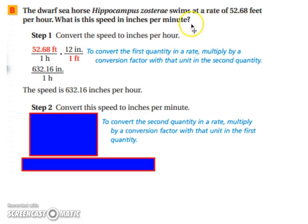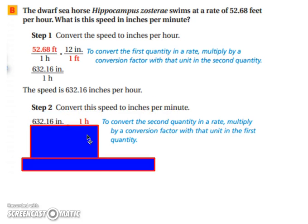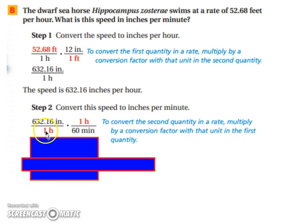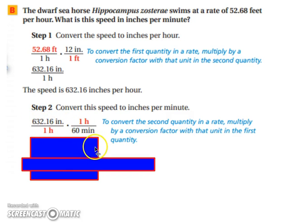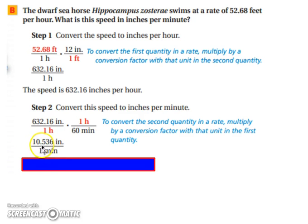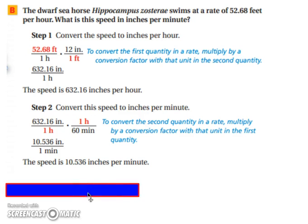However, we also need to change it from hours to minutes. We know there are 60 minutes in an hour, so 632.16 times 1 over 60. When you simplify, there's one on the top and one on the bottom, so you can simply go 632.16 divided by 60, leaving you with 10.536 inches. So the dwarf seahorse travels at a speed of 10.536 inches per minute.